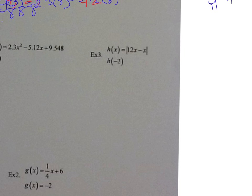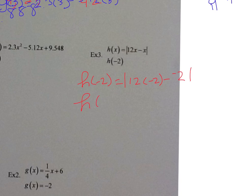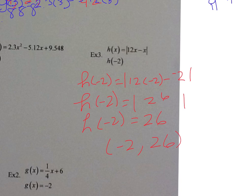For example 3, we have h of x is equal to the absolute value of 12x minus x, and we're looking for h of negative 2. So when the input is negative 2, we have the absolute value of 12 times negative 2 minus negative 2. Plugging in what's inside the absolute value gives 26, and the absolute value of 26 is 26. So the input is negative 2 and the output is 26.